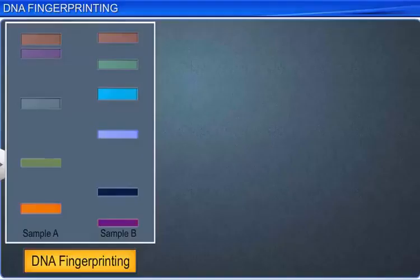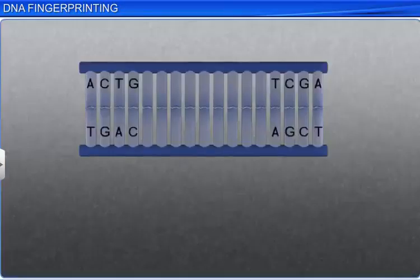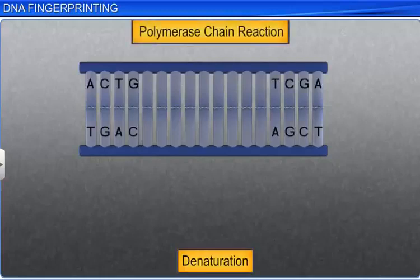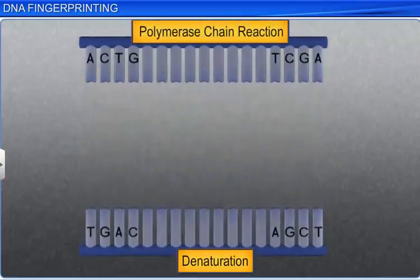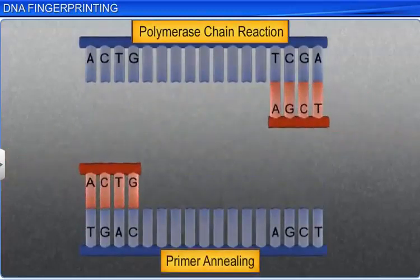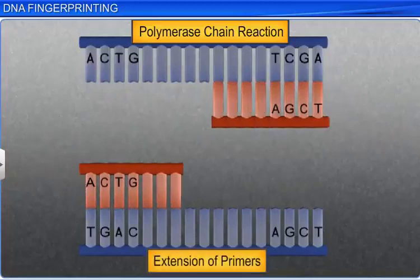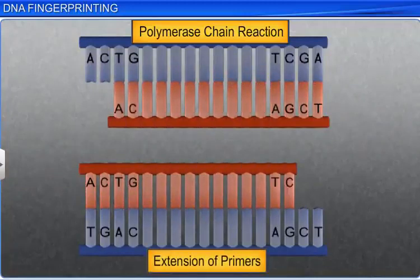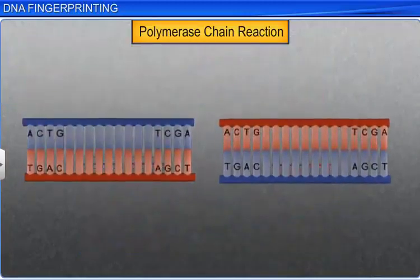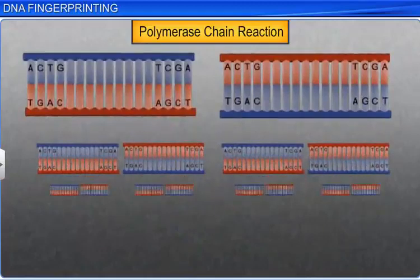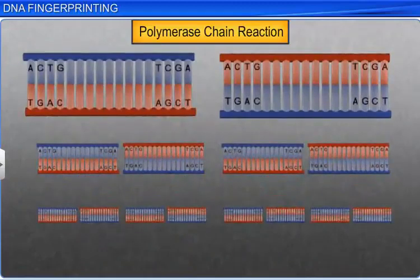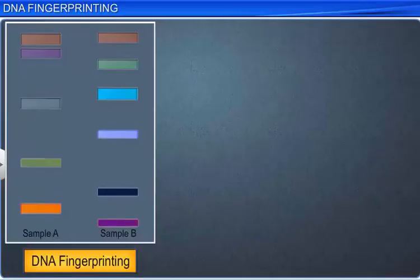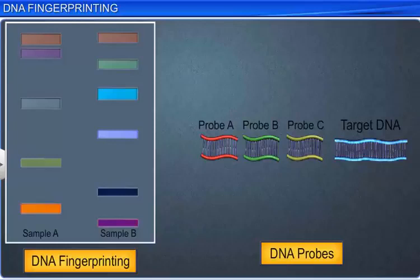Today, the accuracy of the DNA fingerprinting technique has further improved due to the advent of the polymerase chain reaction, or PCR, where multiple copies of a single DNA sequence can be made. DNA fingerprinting has also advanced due to the use of different types of DNA probes.